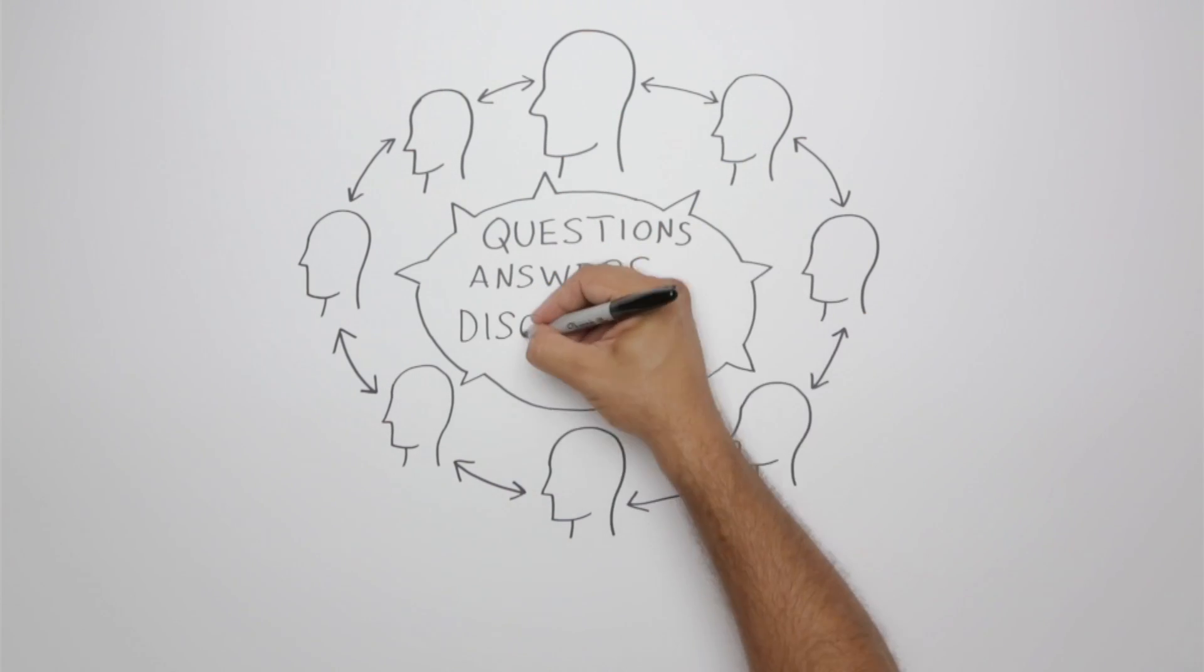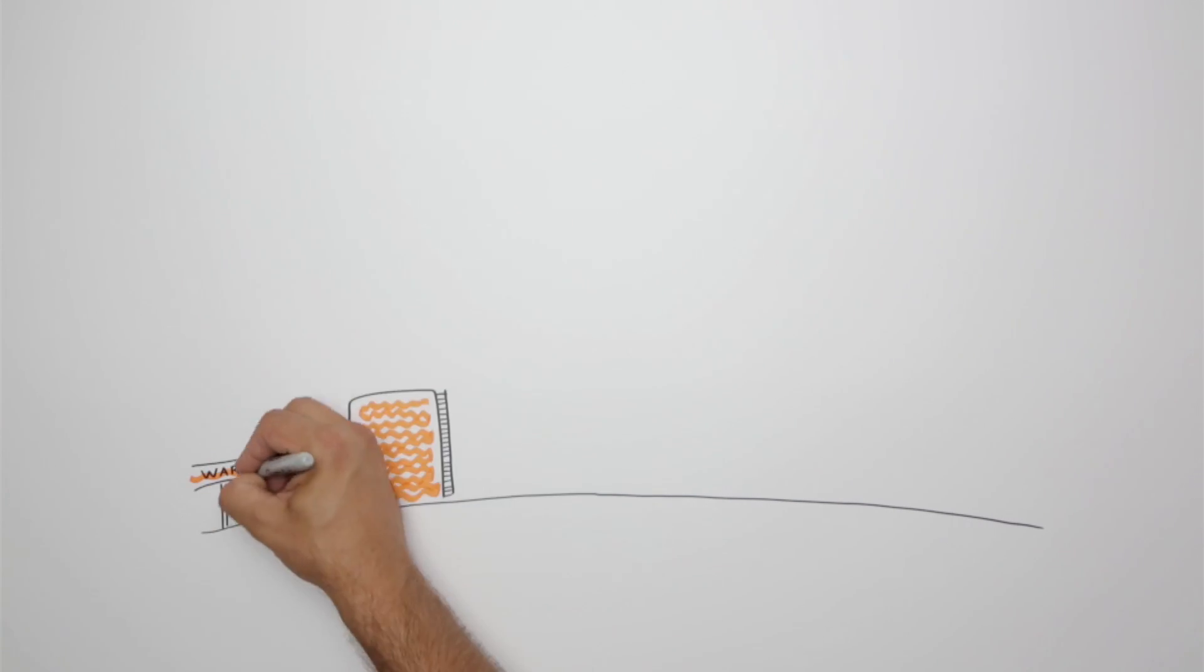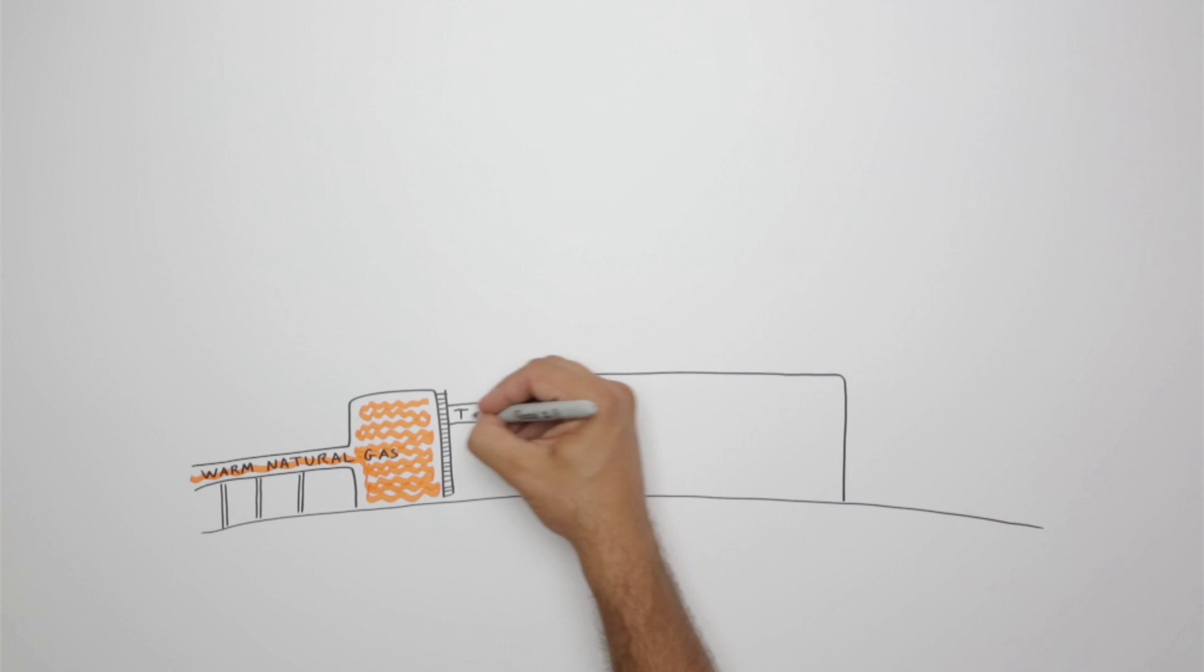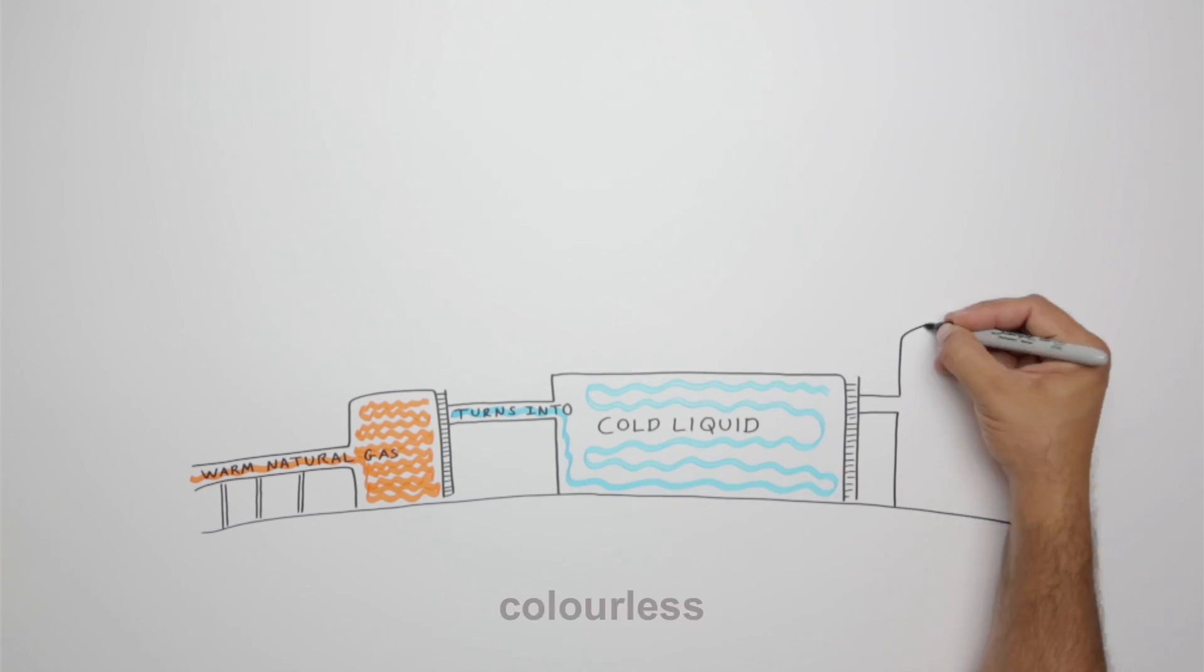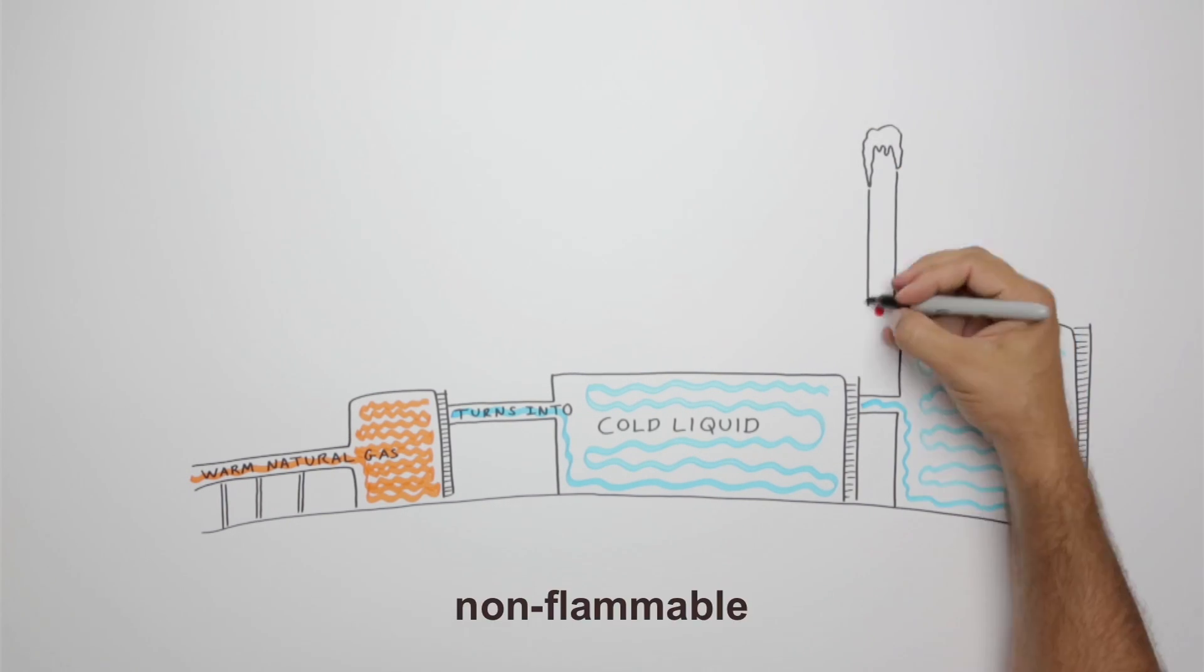The LNG processing plant works like a giant refrigerator that turns warm natural gas into a cold liquid called liquefied natural gas, or LNG. LNG is colorless, odorless, non-corrosive, non-toxic, non-flammable, and non-explosive.